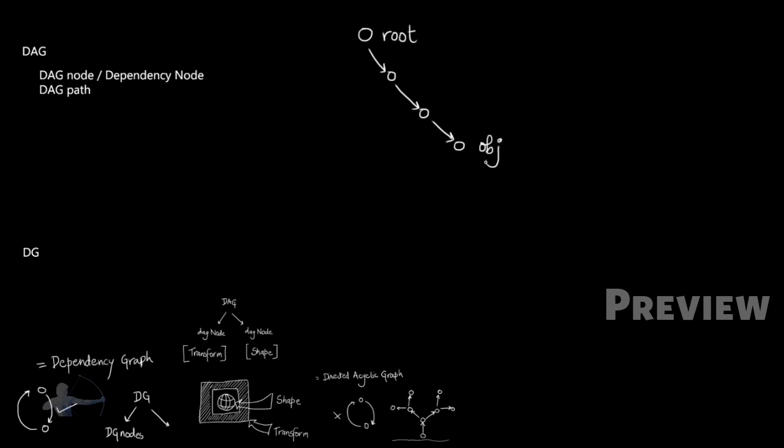Without DAG path, Maya has no idea where that particular object is in world space.